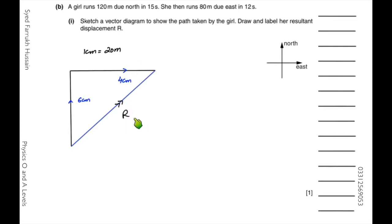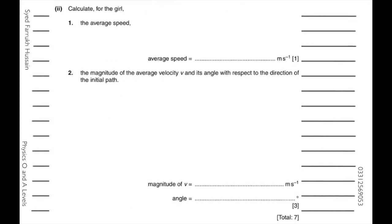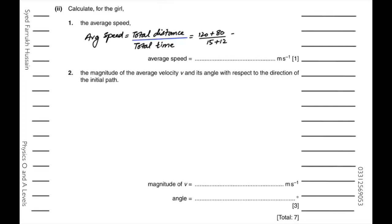Speed equals total distance divided by total time. Total distance is 120 plus 80 = 200 meters; total time is 15 plus 12 = 27 seconds. So speed equals 200 divided by 27, which gives 7.407. Rounded to two significant figures according to the data, the answer is 7.4 meters per second.